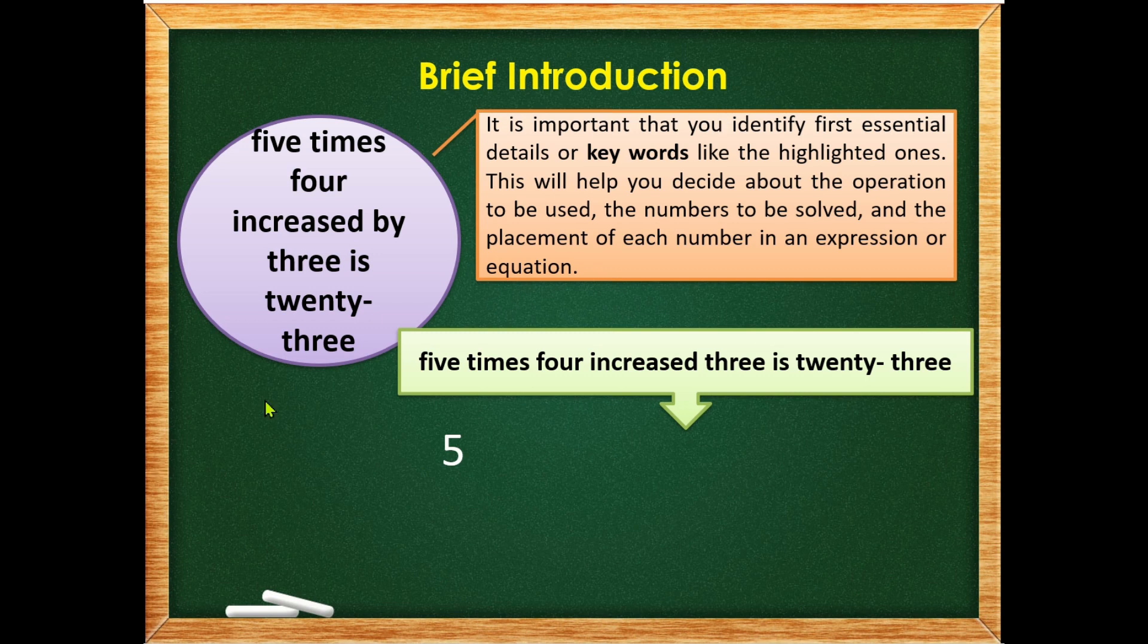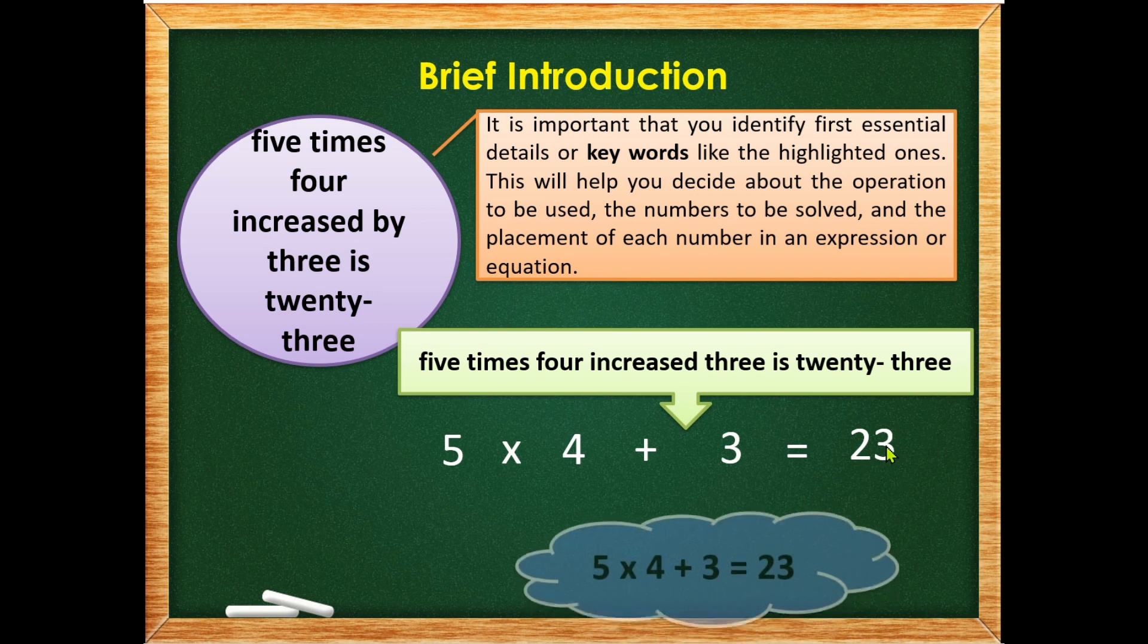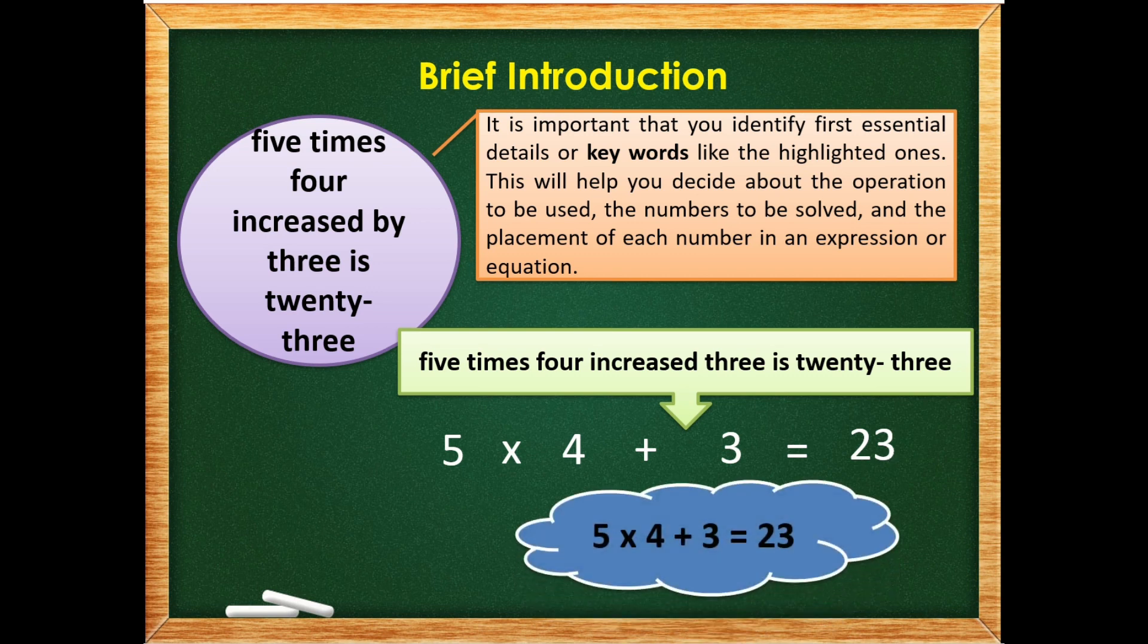So let's translate each word into numbers. So we have 5 times 4, increased, which means addition, 3, is which pertains to equal to, that is 23. So therefore, to translate this into equation, we have 5 times 4, plus 3, is equal to 23.